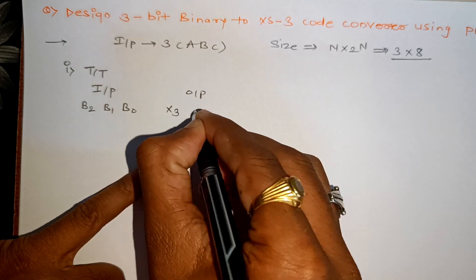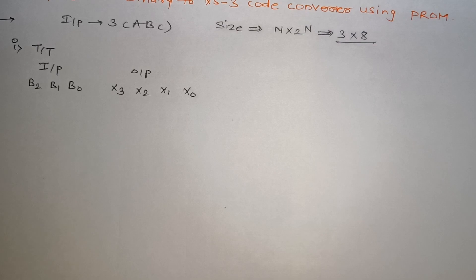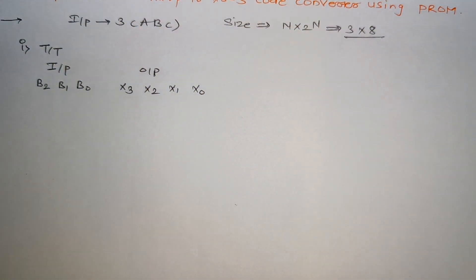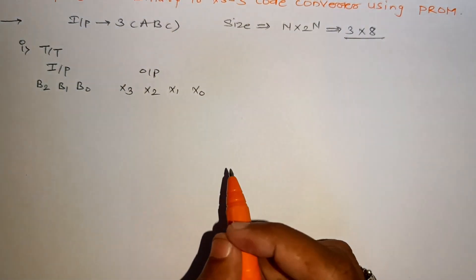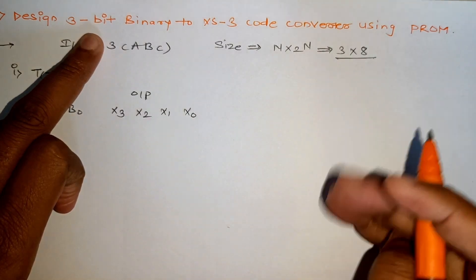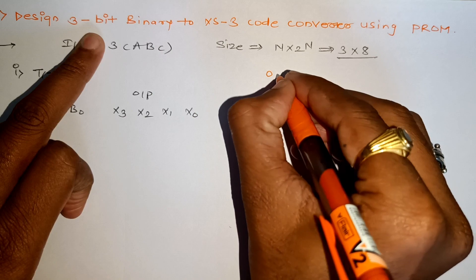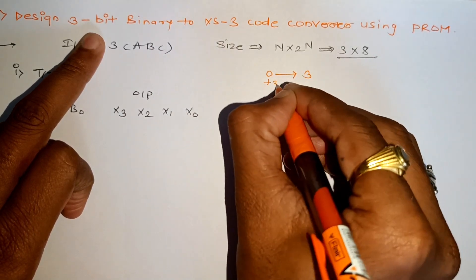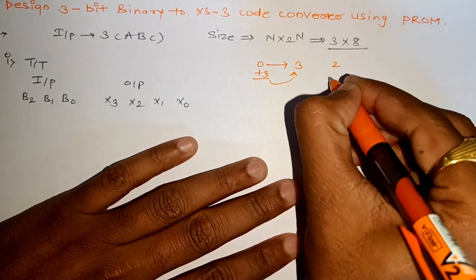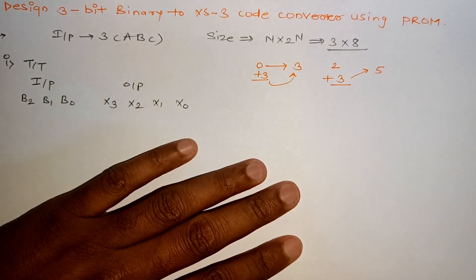Now the question is, sir, why are we writing this as X3, X2, X1, X0? The reason is we have to convert binary to XS3. So what happens? See, whatever binary number is given, we have to add 3 in it. Let's suppose if we have 0 in binary, then the XS3 will be 3, that is 0 plus 3 will be 3. Similarly if we have 2, then adding 3 to it becomes 5. So whatever binary number we have, we will add 3 to it, and that becomes XS3.